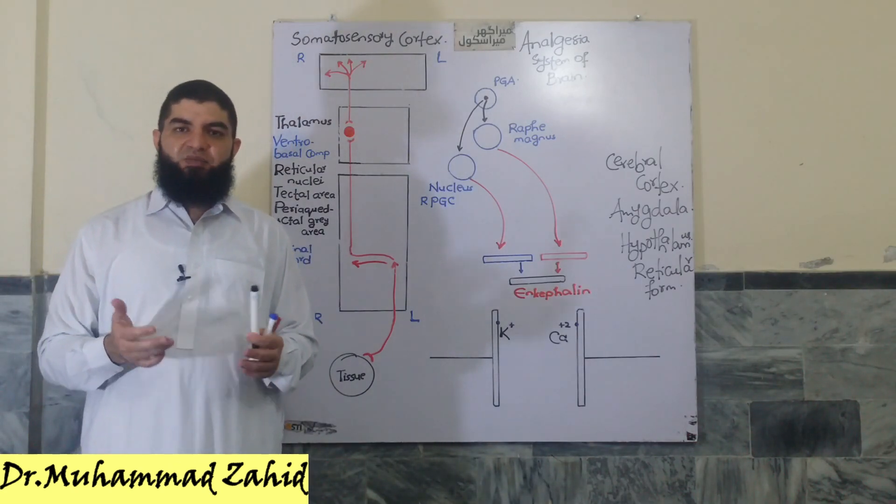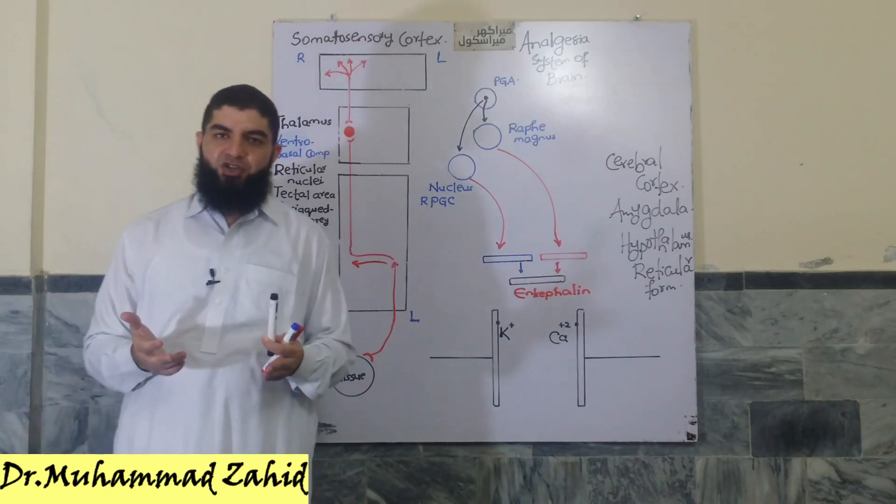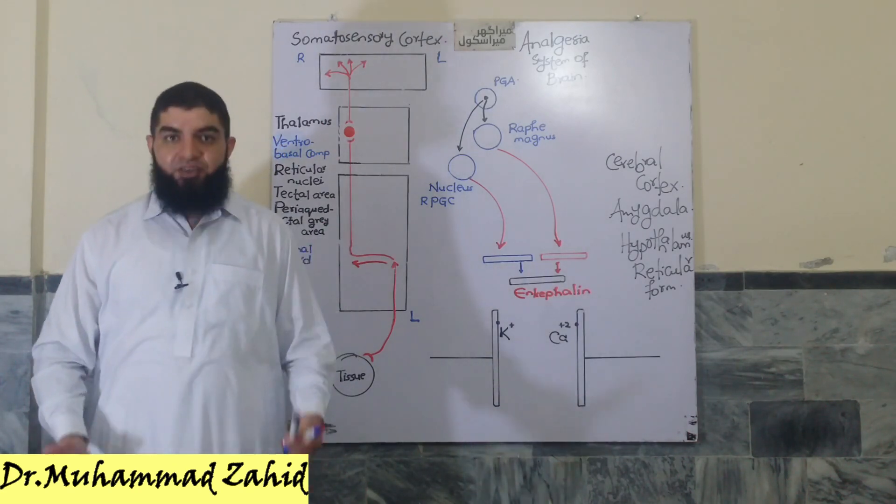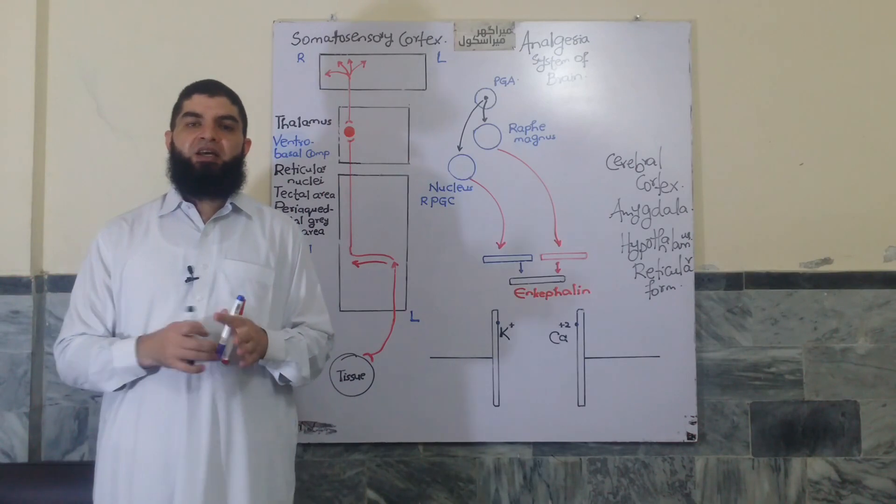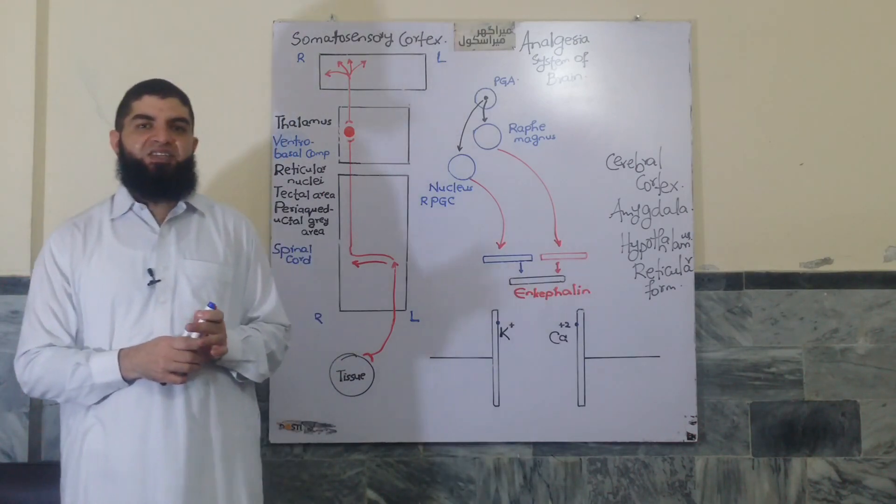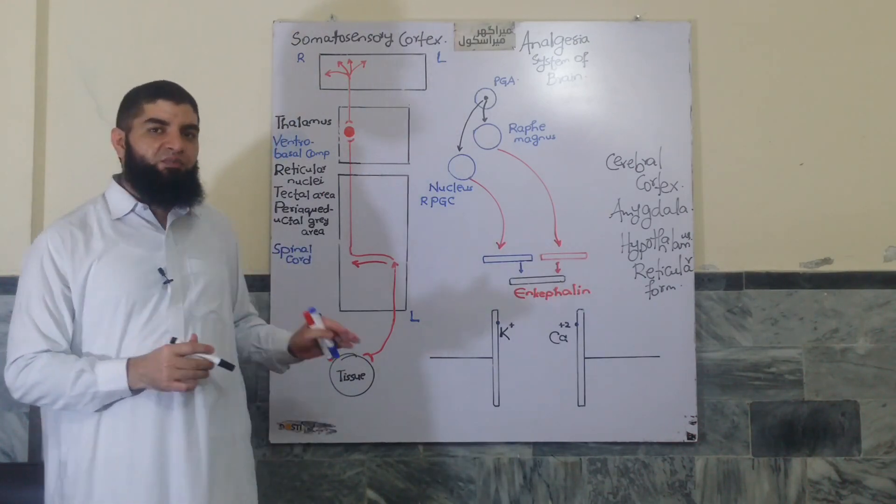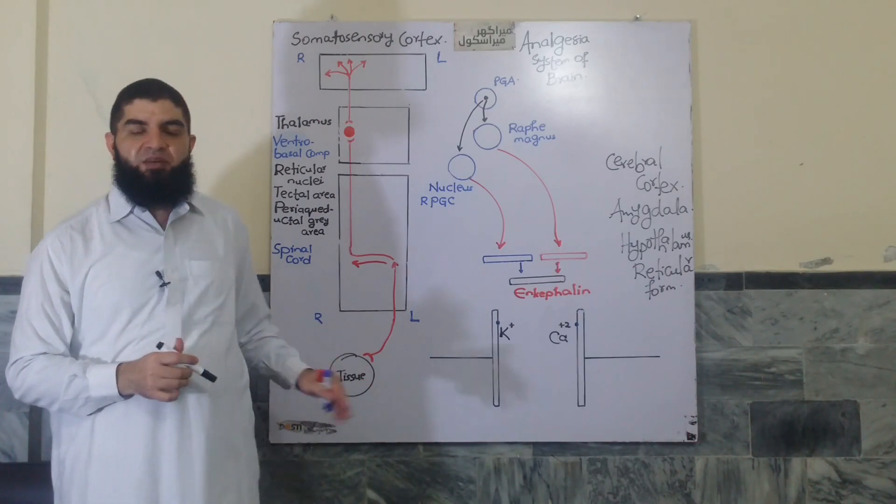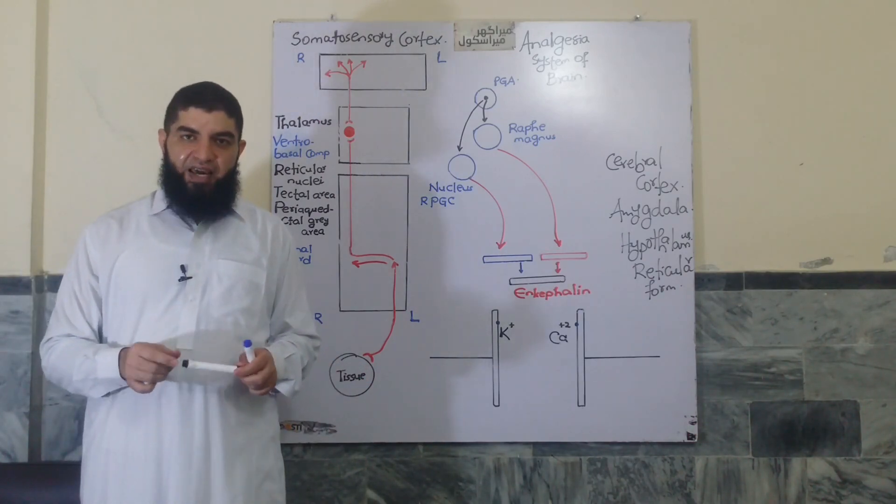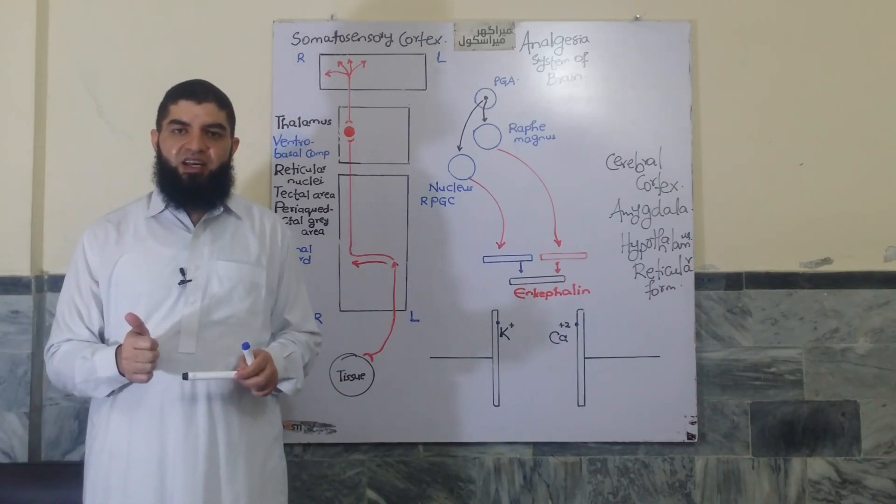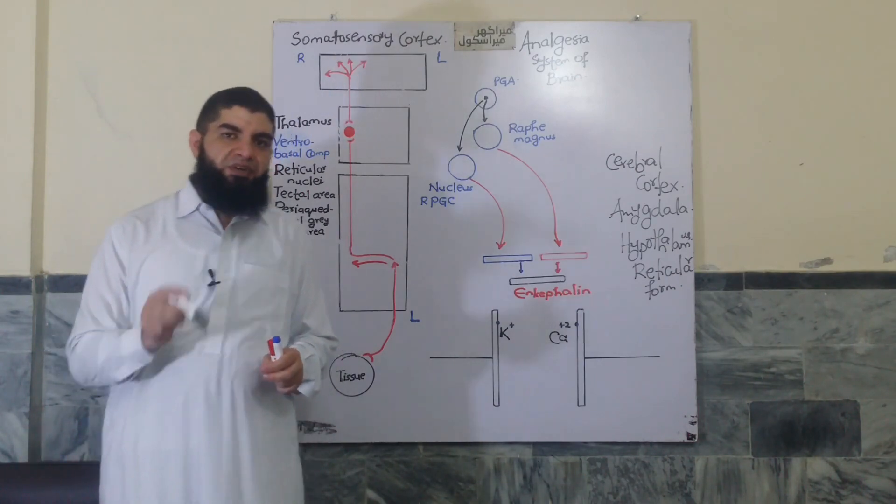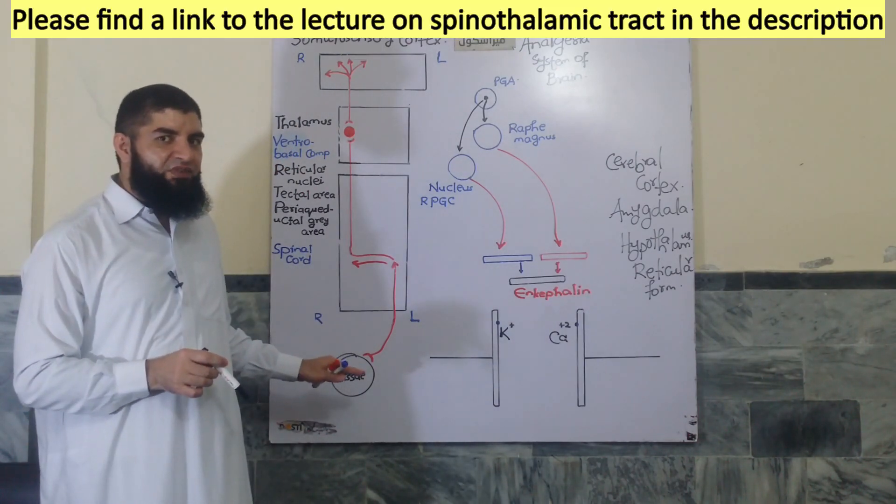A system that is meant primarily for suppression of pain signals arising in different parts of the body. To be able to understand the brain analgesia system we need to have some understanding of the spinothalamic tract. Even though we have a dedicated lecture on the spinothalamic tract, I give you a brief refresher here just for the sake of convenience.